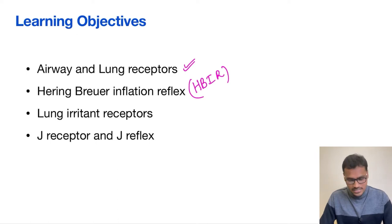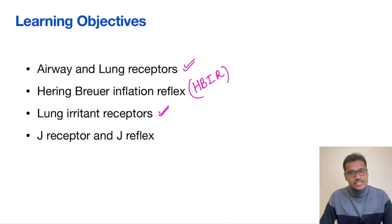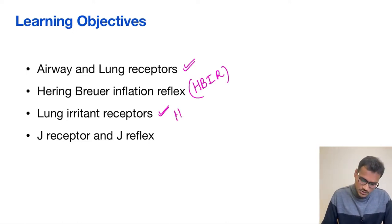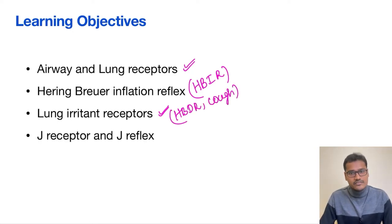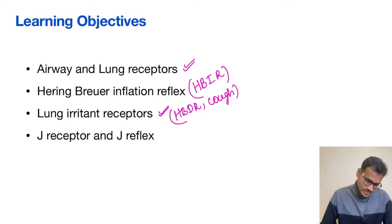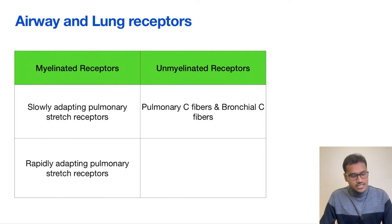We will also talk about the lung irritant receptors, which are involved in the Hering-Breuer deflation reflex as well as the cough reflex. Finally, we will cover the J receptors and J reflex. Now coming to the airway and lung receptors.